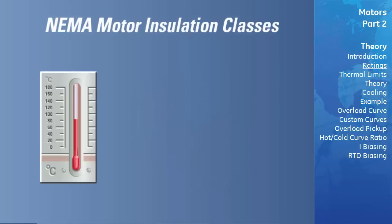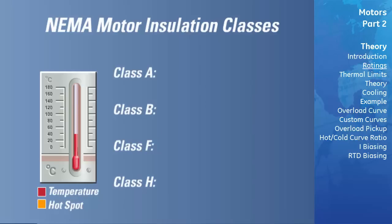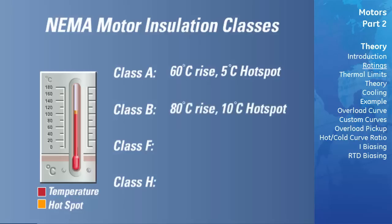The maximum temperature rise and hot spot for each class of insulation is as follows. For class A insulation, the maximum rise is 60 degrees Celsius with a hot spot of 5 degrees Celsius. For class B insulation, the maximum rise is 80 degrees Celsius with a hot spot of 10 degrees Celsius. For class H insulation, the maximum rise is 125 degrees Celsius with a hot spot of 15 degrees Celsius.